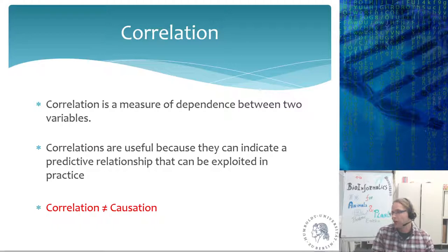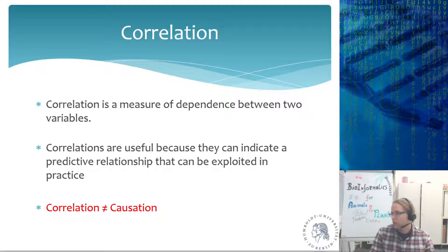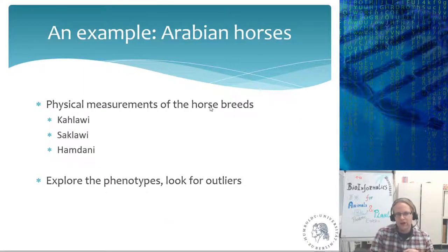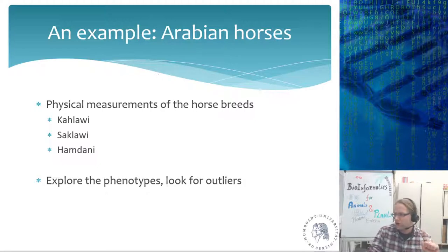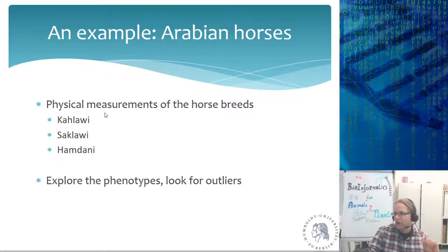Let me show an example with Arabian horses that we studied. I'll walk through the different phenotype measurements we took and how we can relate these to each other. Arabian horses come in five or six different breeds depending on how you define them. The main breeds are Kalawi, Saklawi, and Hamdami, and we took physical measurements on individuals from each type.